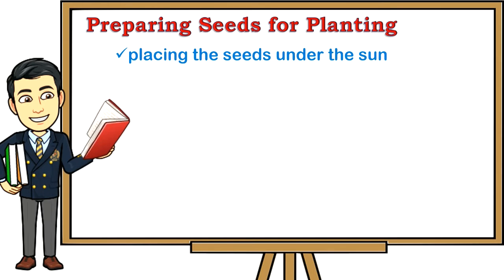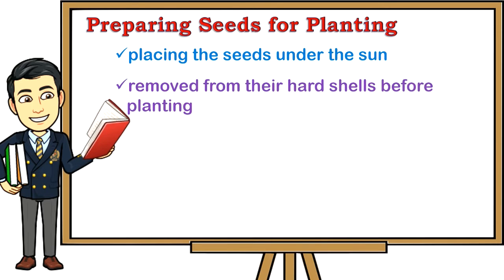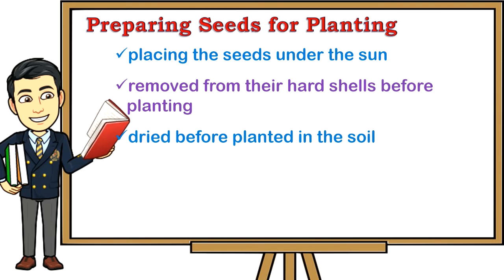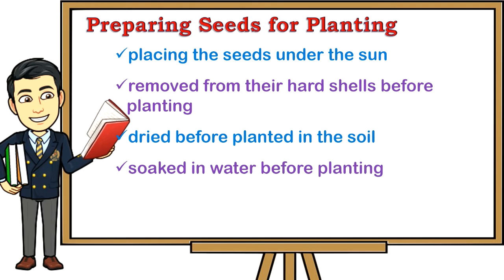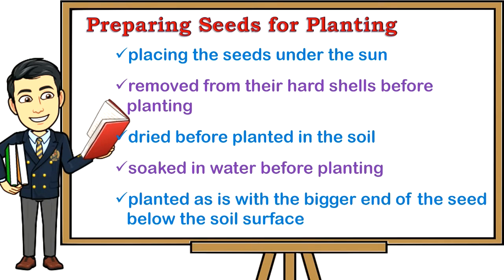Some seeds, like mango, have to be removed from their hard shells before planting. Seeds like santan need to be dried before planted in the soil. There are also seeds that need to be soaked in water before planting, like the iple-iple seeds. Seeds of avocado are planted as-is, with the bigger end of the seed below the soil surface.